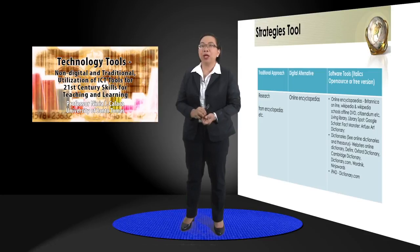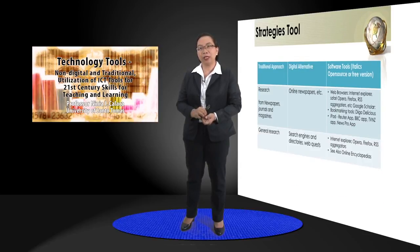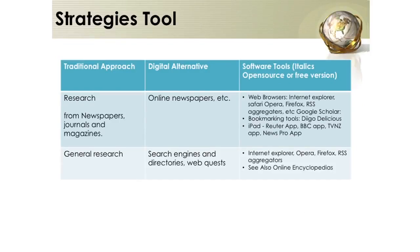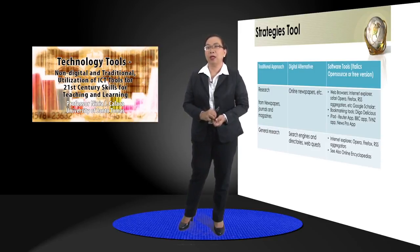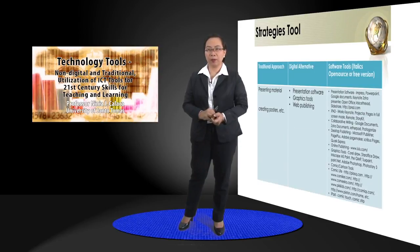We also have online dictionaries like the Oxford Dictionary, Cambridge Dictionary, and iPad online dictionary. If the activity is about research from papers, journals, and magazines, the digital alternative is to use online newspapers and web browsers such as Internet Explorer, Safari, Opera, and Firefox. We can use aggregators and Google Scholar as well. For bookmarking tools, we can use the iPad Router app, BBC app, TVNZ app, Newspro app, and others.